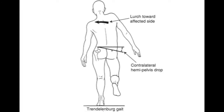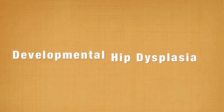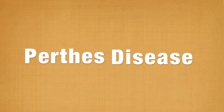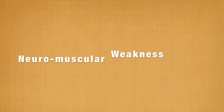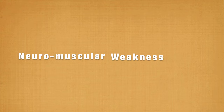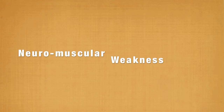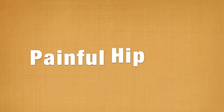This gait is best observed by looking at the patient's shoulders. Some of the causes of this type of gait include developmental dysplasia of the hip, Legg-Calvé-Perthes disease, slipped upper femoral epiphysis, or due to neuromuscular weakness like in Duchenne's muscular dystrophy. Pain in the hip can also result in a Trendelenburg gait.